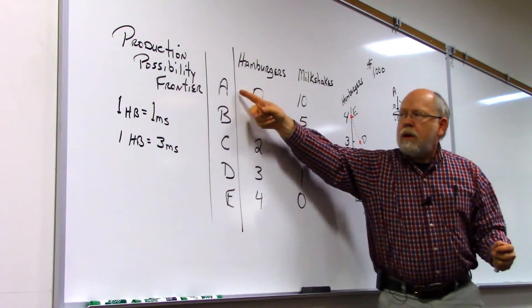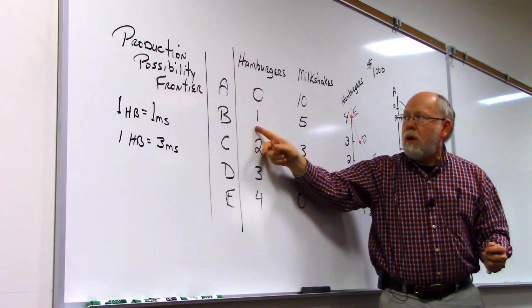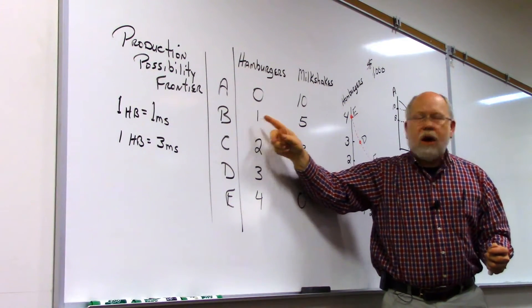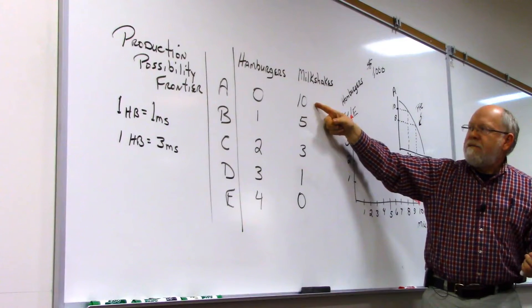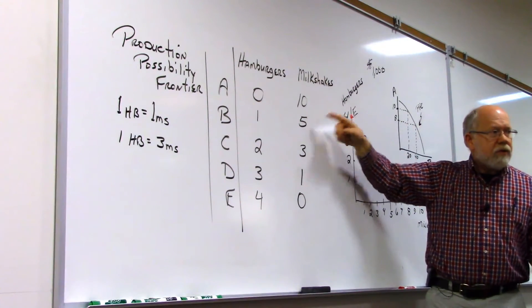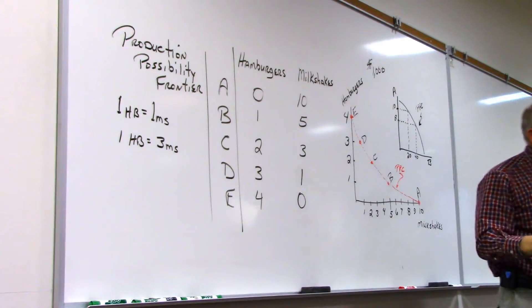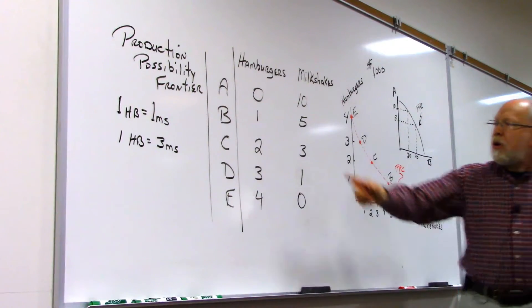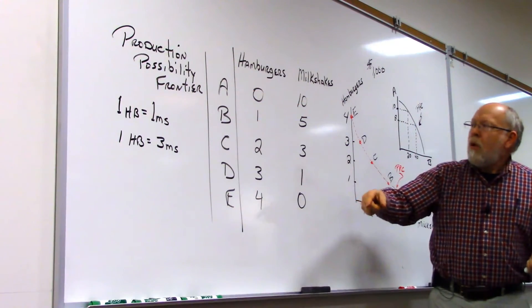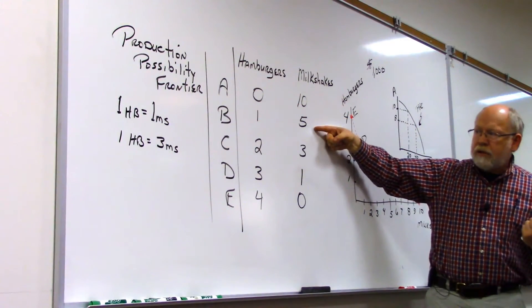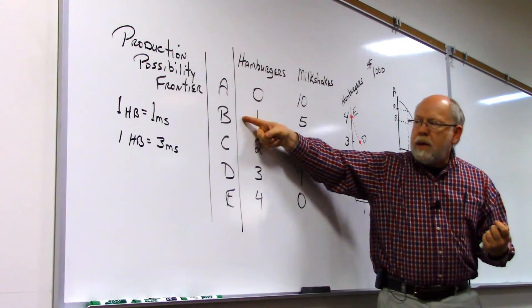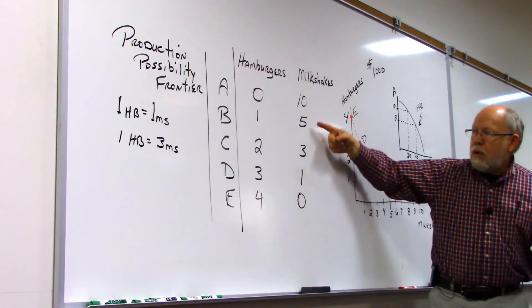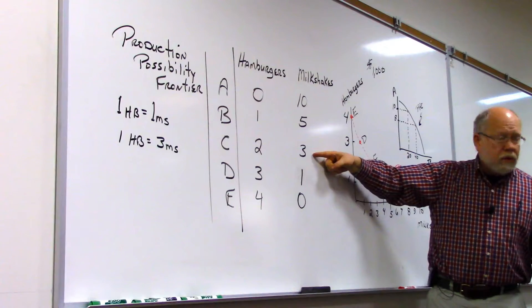If we produce a hamburger, going from zero to one, our opportunity cost is going to be giving up five milkshakes. So our opportunity cost is always what we give up. So to go from point A to point B, what we're giving up is five milkshakes. To go from point B to point C, we're going to be giving up two milkshakes.